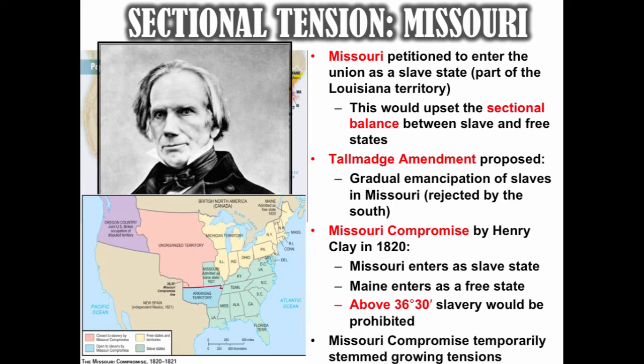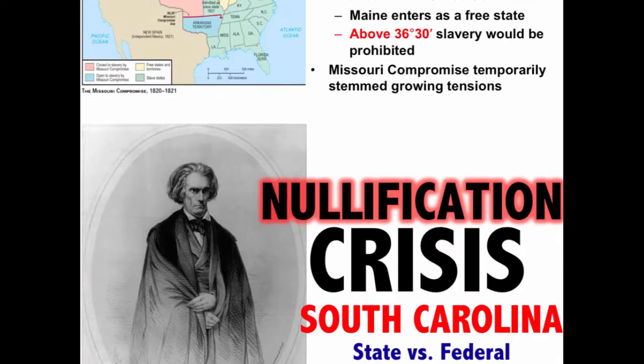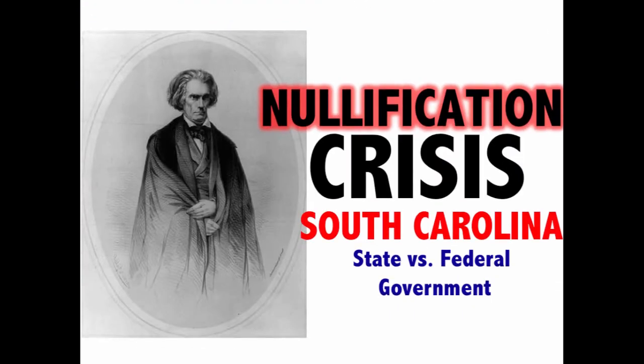The Missouri Compromise temporarily stemmed growing sectional tensions. The next example of sectionalism actually takes place not about slavery but rather the tariff. This situation leads to a nullification crisis and a true showdown between the federal government and the state government of South Carolina.